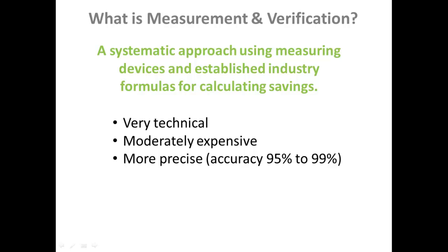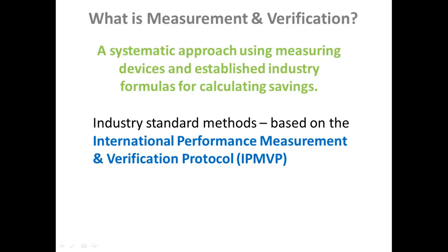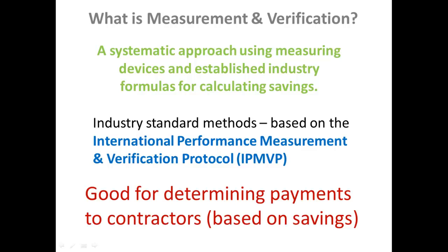M&V — measurement and verification — is a different approach. It's a systematic method using measuring devices, equipment, and established industry formulas for calculating savings. It's fairly technical and moderately expensive, but more precise than benchmarking. The industry standard methods are based on the International Performance Measurement and Verification Protocol, or IPMVP. This is a good approach for determining specific savings, especially when paying contractors based on the savings they achieve through their work.